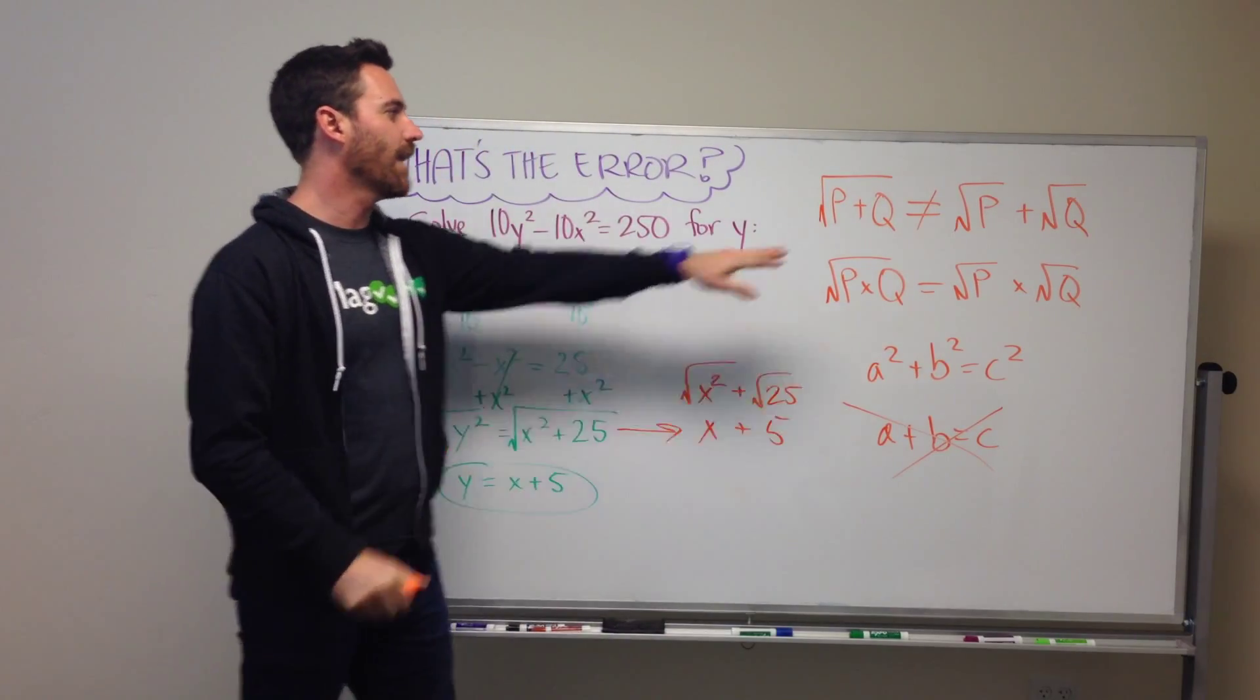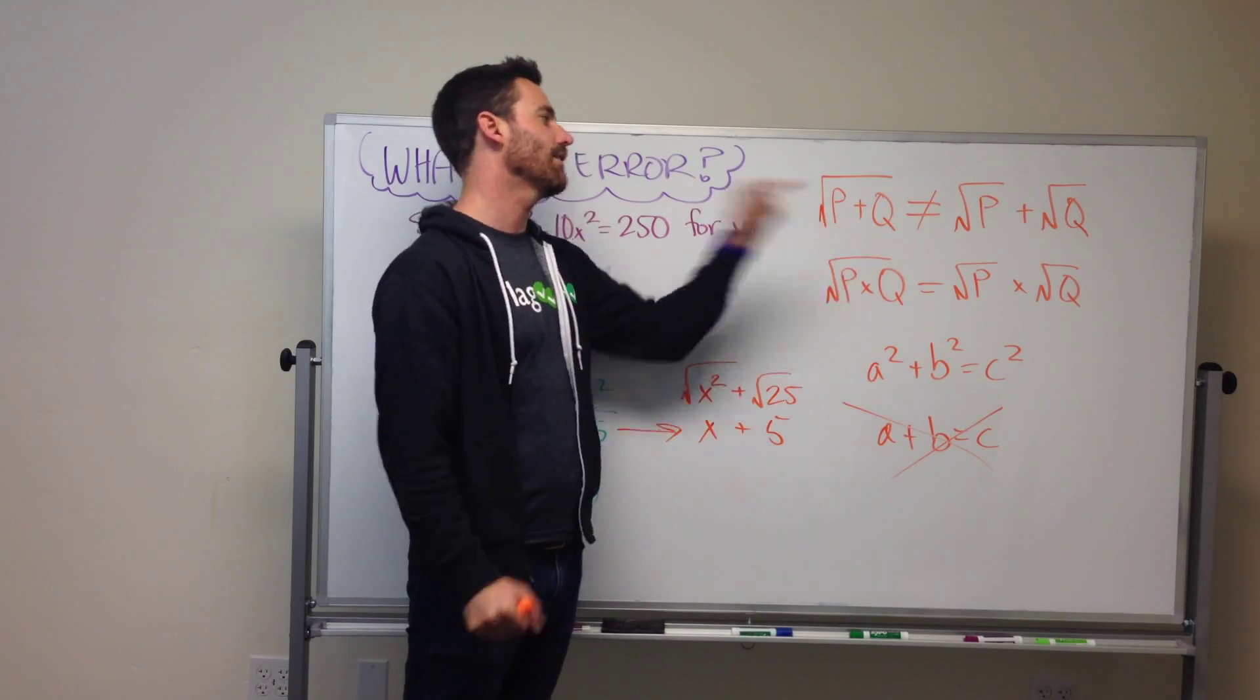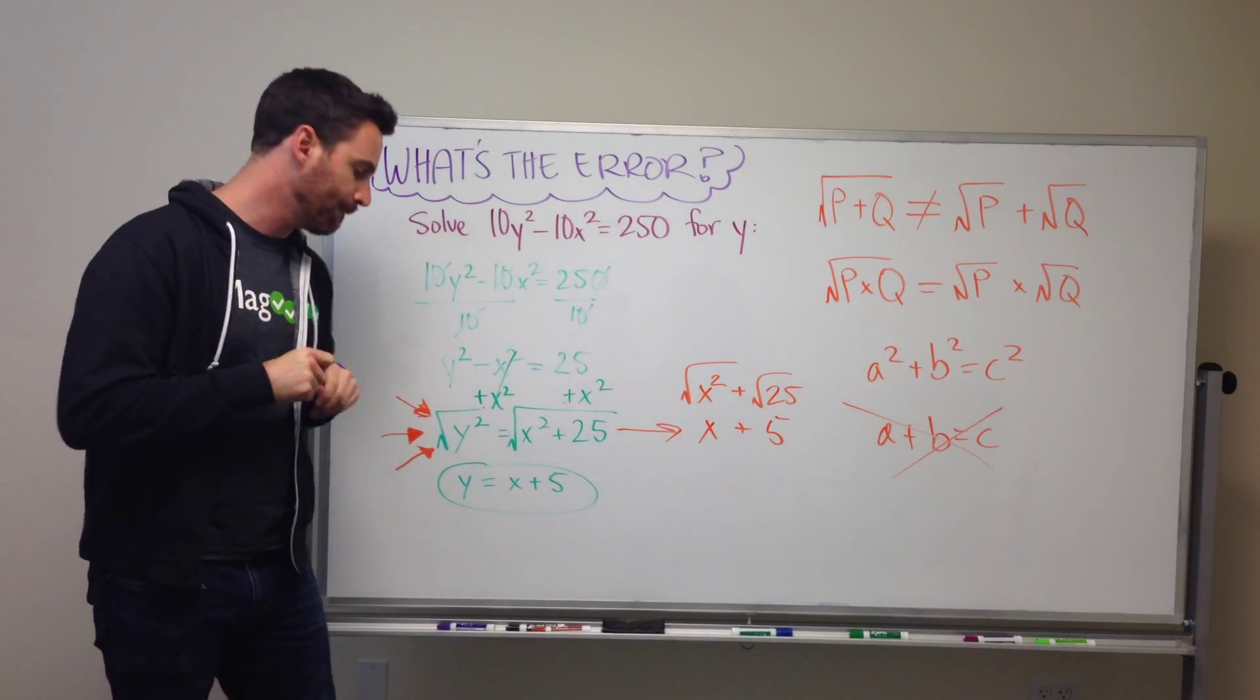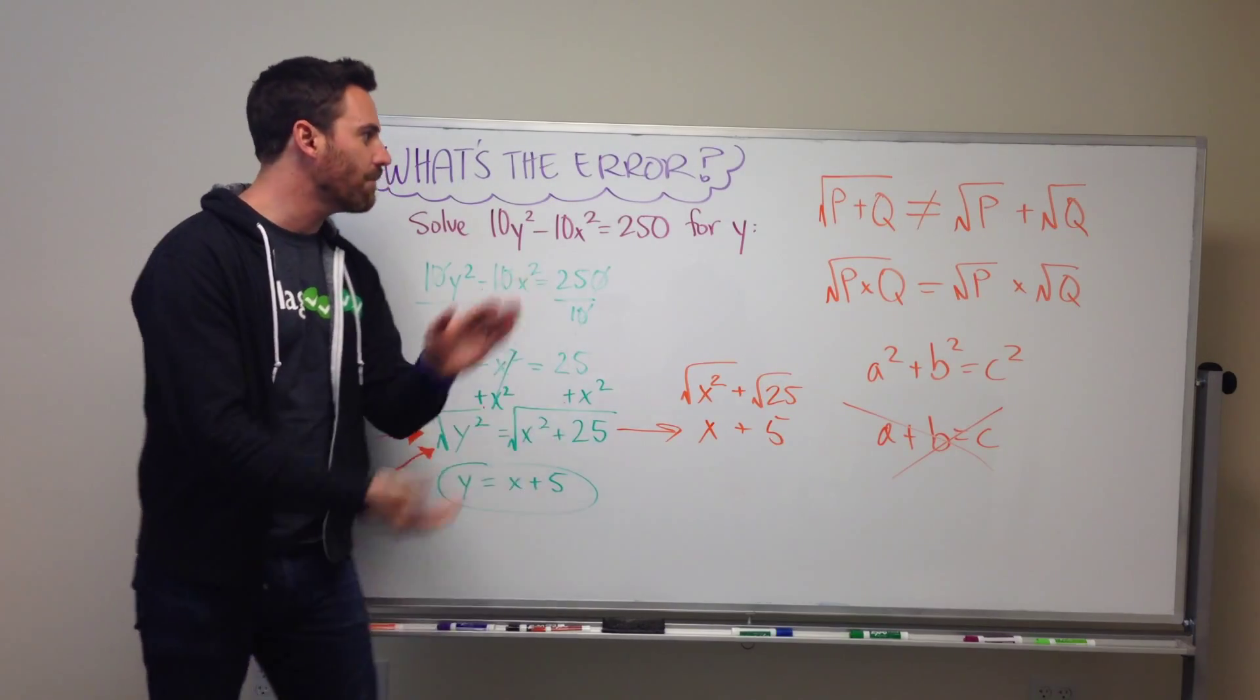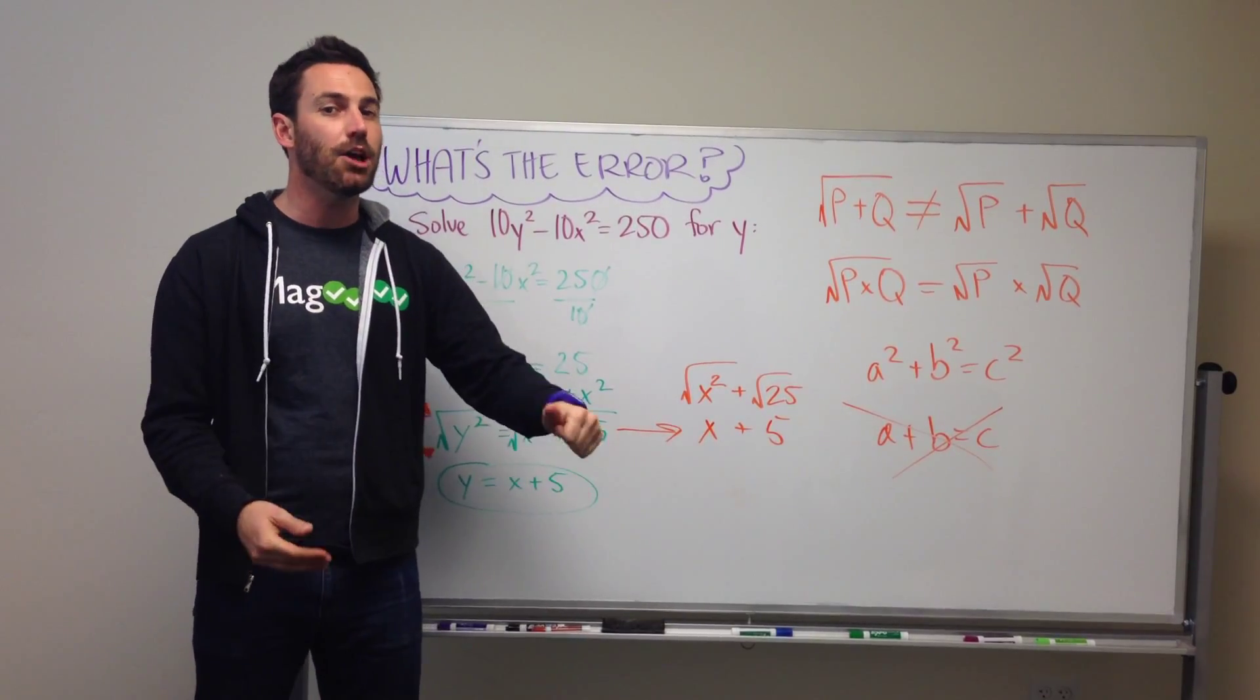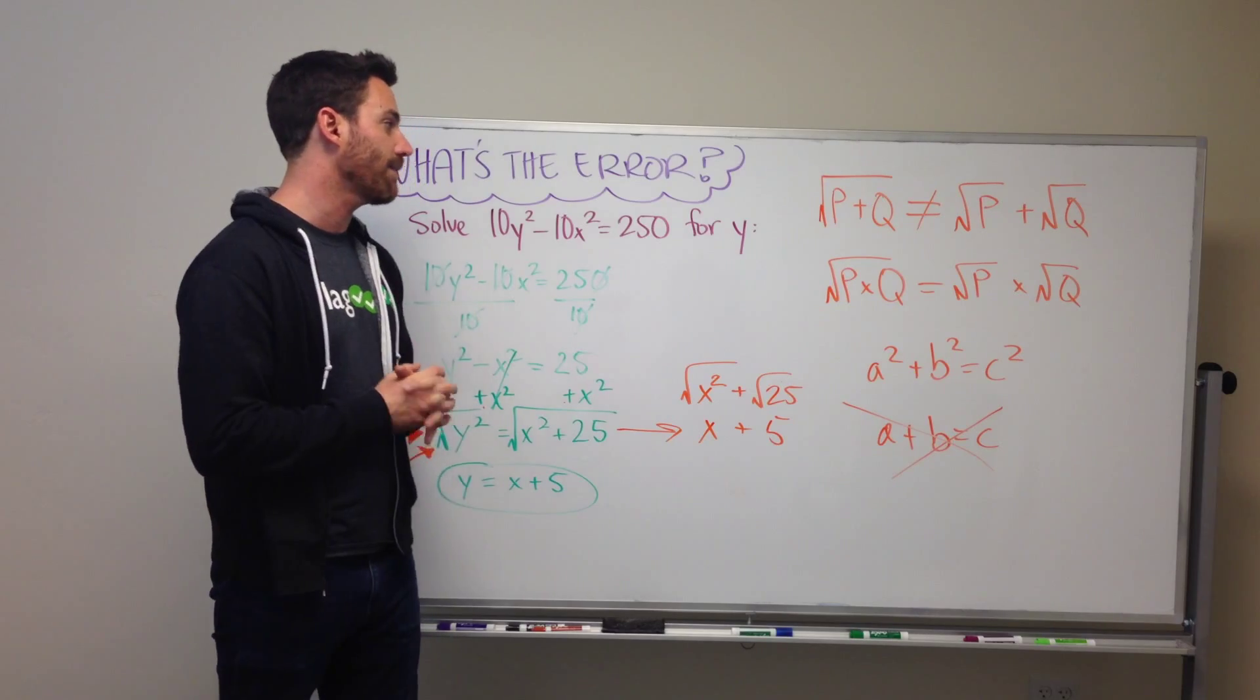So, remember that when you're adding or subtracting, you cannot take the square root of both of the items that are there. All right. So, that is our math foundation rule for the day. We'll put a link below the video so that you can go and read more about this math fact.